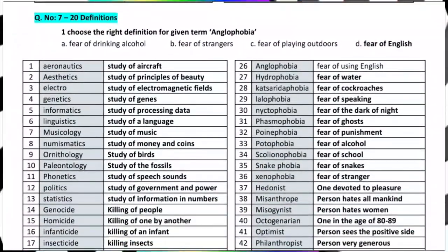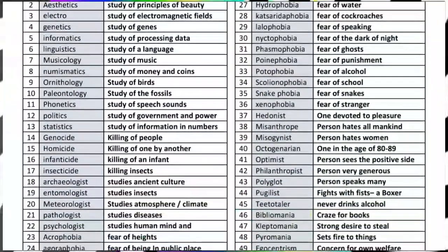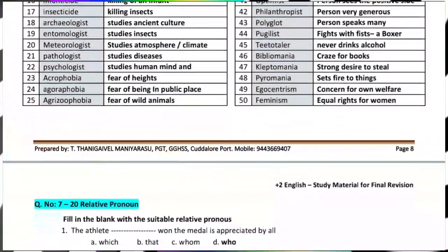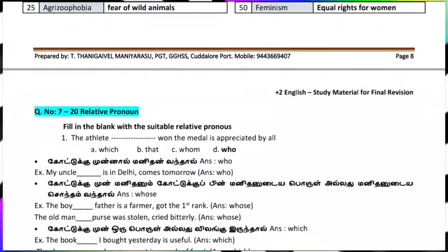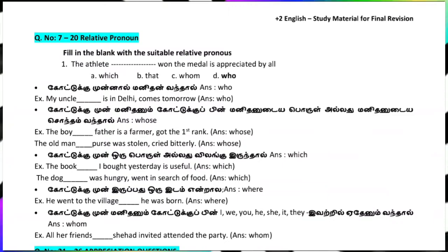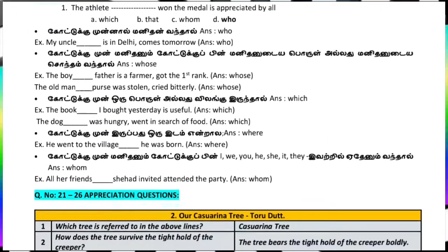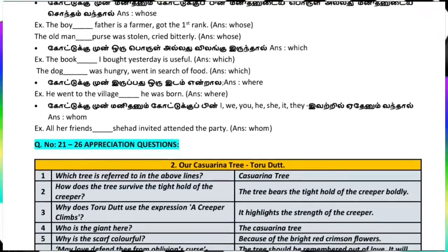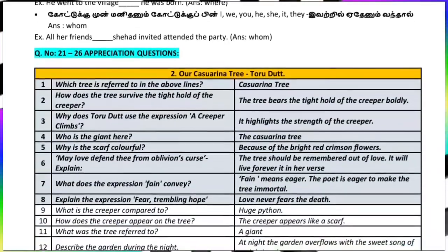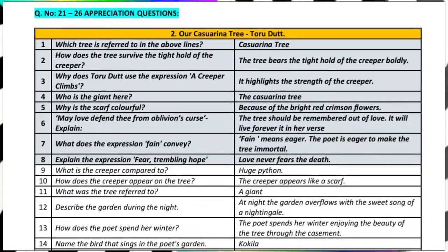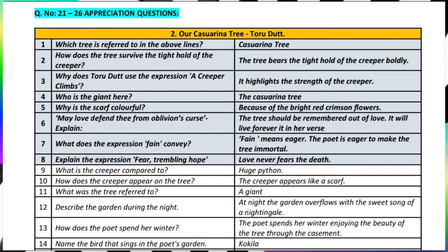Then appreciation questions — these are based on poems. There are four poems. For these four poems, there is a short trick. The prose and poem author names are very important. For example, there is a trick like 'Kazarina' to remember them.